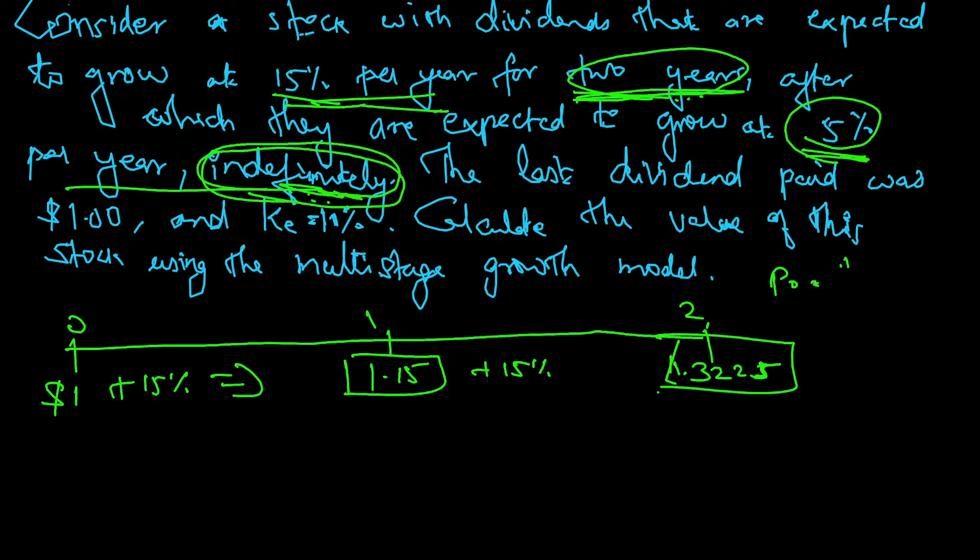Gordon growth model says P0 equals D1 divided by r minus g. D1 is expected dividend divided by required rate of return minus constant growth. P is the previous year's price and D1 is the next year's dividend.